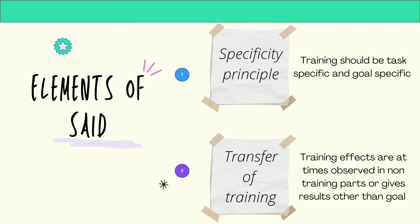The next element of the SAID principle is transfer of training, also called the overflow principle. It states that training effects are at times observed in non-training parts, or give results other than the intended goal, which can be either a positive effect or a negative effect.